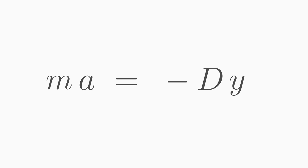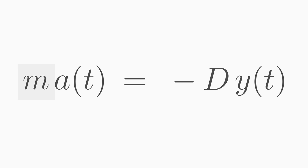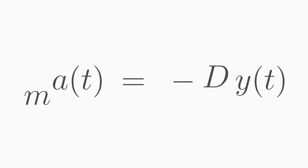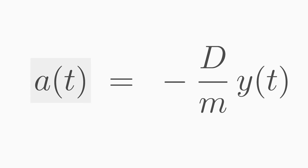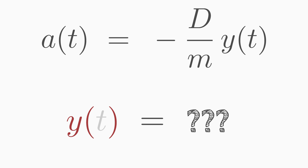The displacement is therefore dependent on the time t. Thus, also the acceleration a depends on the time t. The mass remains the same at any time no matter how much the spring is displaced. This is also true in good approximation for the spring constant d. If we now bring m to the other side, we can use this equation to calculate the acceleration experienced by the mass at each displacement y.